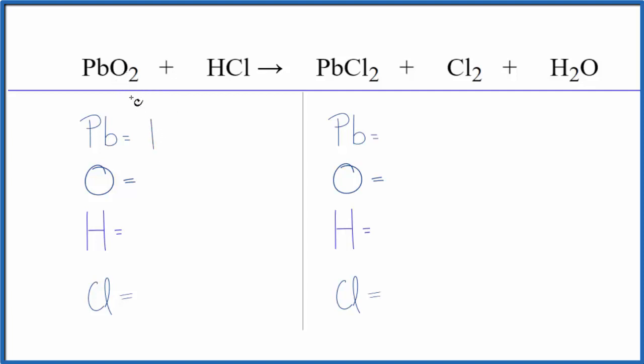We have one lead atom, two oxygens, and then one hydrogen and one chlorine. On the product side we have one lead, one oxygen, hydrogens we have two, and then for the chlorines be careful we have two plus two. So we have four chlorine atoms.